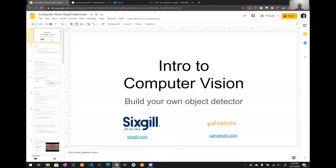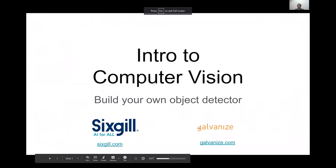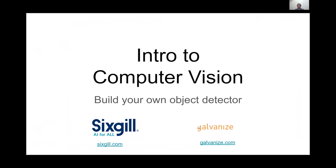We're going to go ahead and get started. Welcome to this workshop. This is an introduction to computer vision, and specifically we're going to go step by step and build our own object detection model.